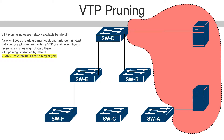VTP pruning increases network available bandwidth by restricting flooded traffic to those trunk links that the traffic must use to reach the destination devices. Without VTP pruning, a switch floods broadcast, multicast, and unknown unicast traffic across all trunk links within a VTP domain, even though receiving switches might discard them. VTP pruning is disabled by default.